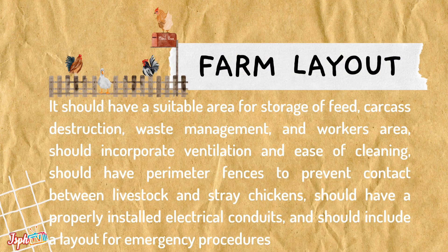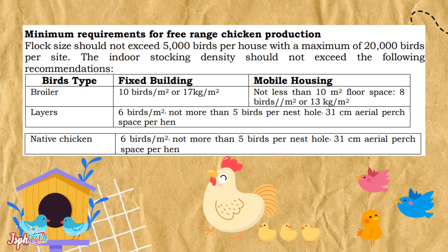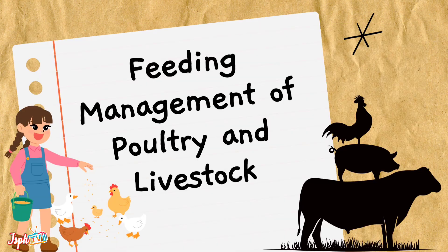For farm layout, it should have a suitable area for storage of feed, carcass destruction, waste management, and workers' area. It should incorporate ventilation and ease of cleaning, should have perimeter fences to prevent contact between livestock and stray chickens, should have properly installed electrical conduits, and should include the layout for emergency procedures. This is the minimum requirements for free-range chicken production.